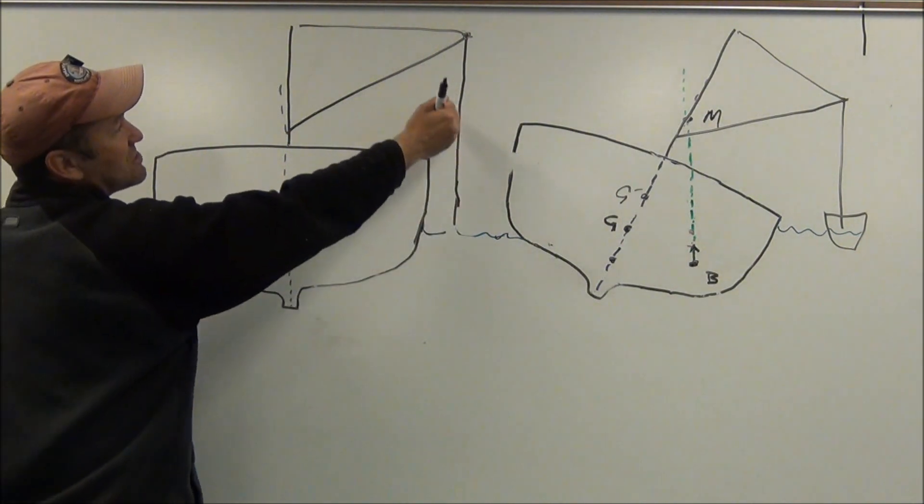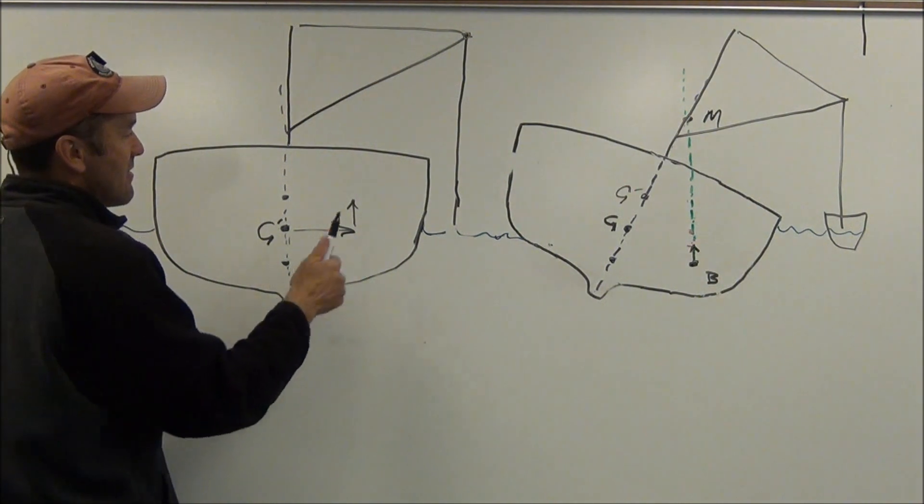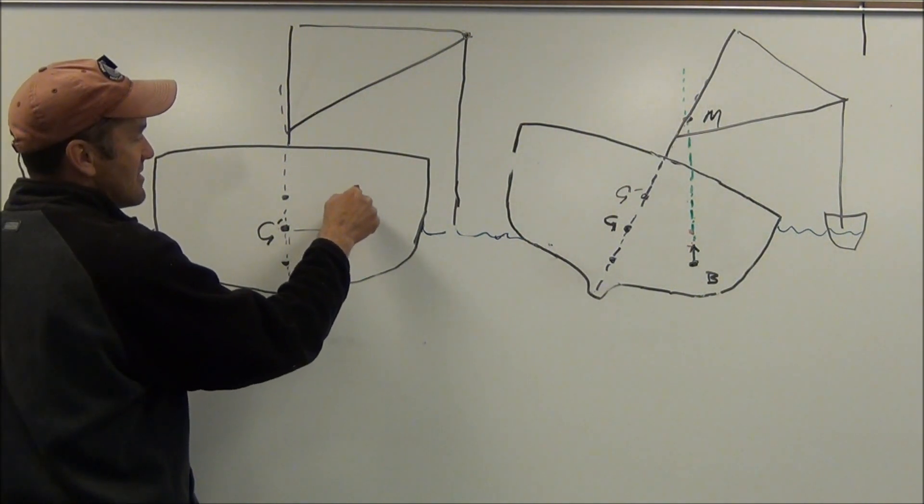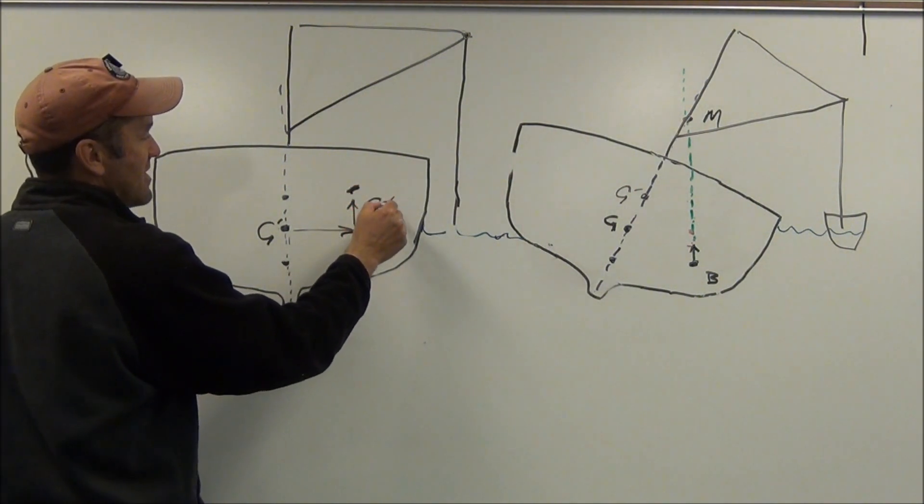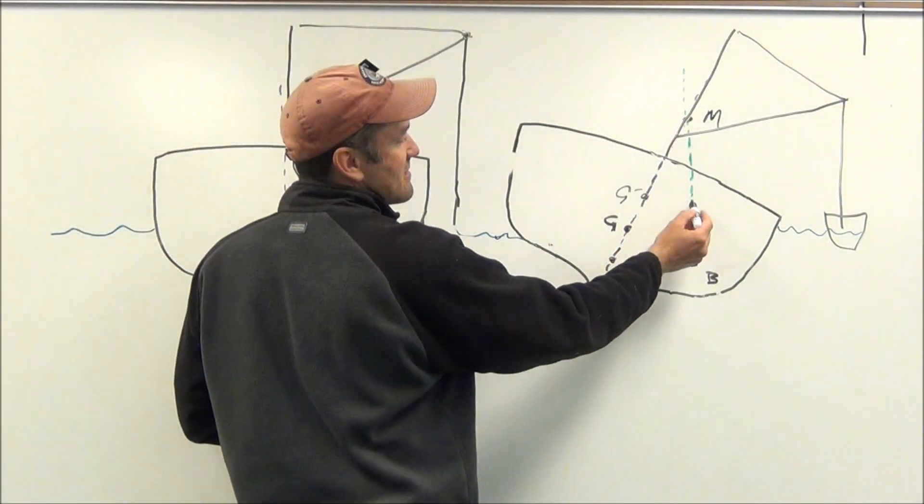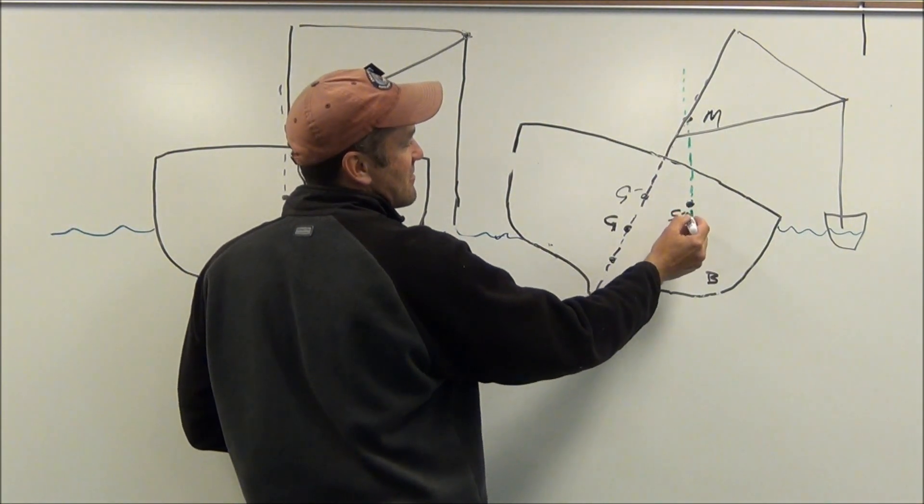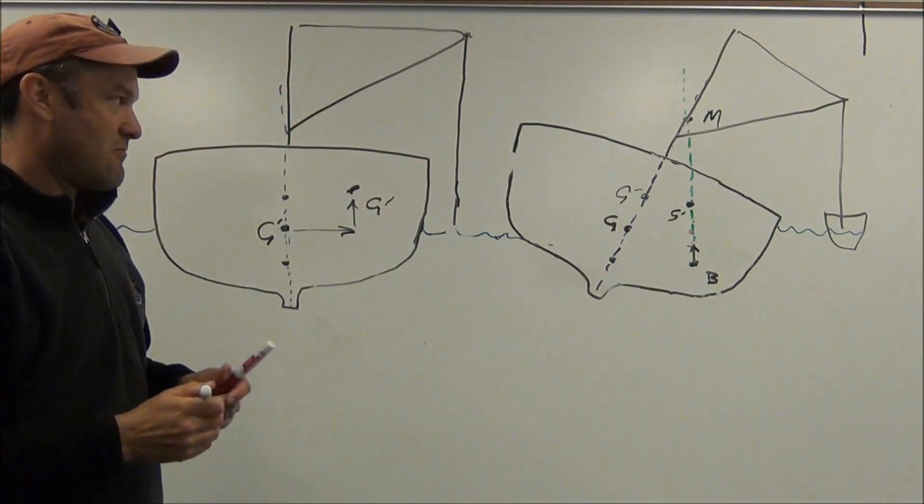But then you also have the vertical shift in the center of gravity because the weight is being lifted from way up here. So then your new center of gravity can shift over to here. So under that circumstance, our new center of gravity is way over here. So we have little to no righting arm.